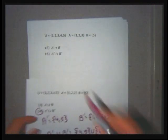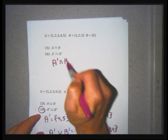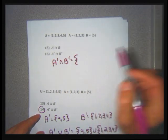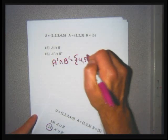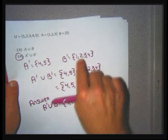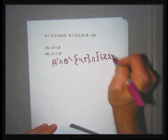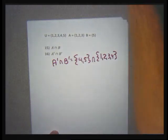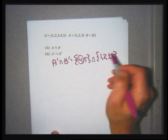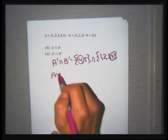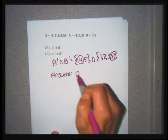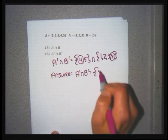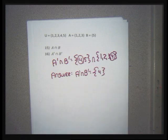Problem 16: A' intersection B'. A' is {4, 5} and B' is {1, 2, 3, 4}. Write the contents of A': 4 and 5. Intersection symbol. Contents of B': 1, 2, 3, 4. Intersection is what they have in common — those two sets have the number 4 in common. So A' intersection B' prime is the set containing just the number 4.